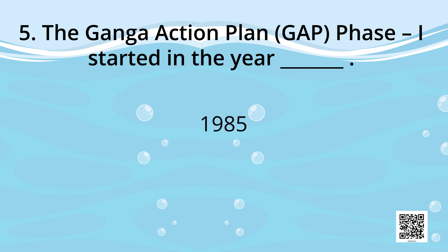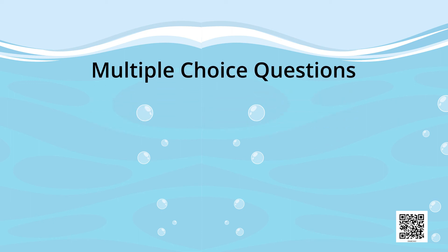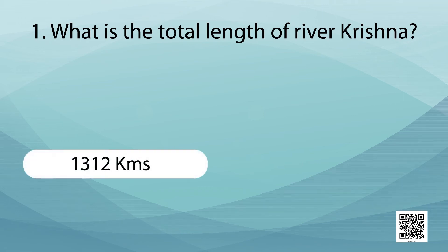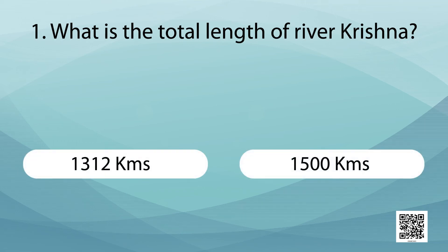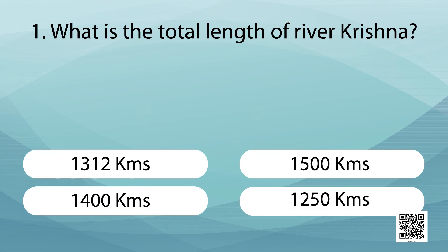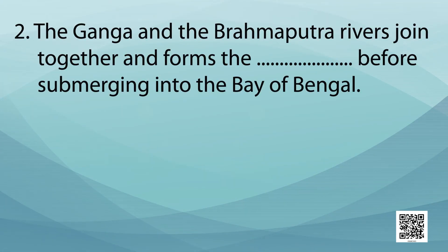Now some multiple choice questions. What is the total length of the river Krishna? The options are 1,312 km, 1,500 km, 1,400 km, or other — the correct answer is 1,400 kilometers. The Ganga and Brahmaputra rivers join together and form the Sundarban Delta before submerging into the Bay of Bengal.